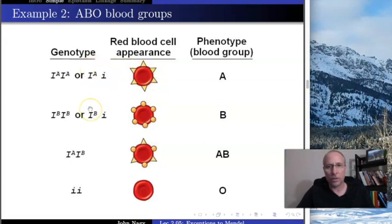Big I^A is dominant to little i. What about B? Same exact logic. B is dominant to little i. This is the fun one. What about this? Big I^A and big I^B. Which one is dominant?